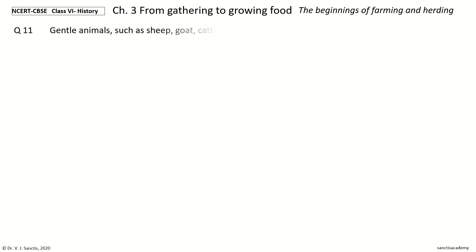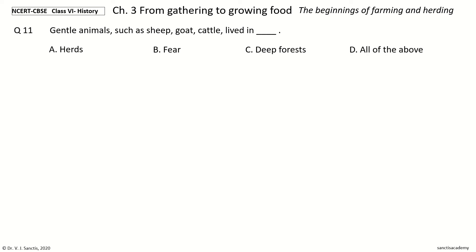Question 11. Gentle animals such as sheep, goat, and cattle lived in what. The options are: herds; fear; deep forests; all of the above. And the answer is herds.